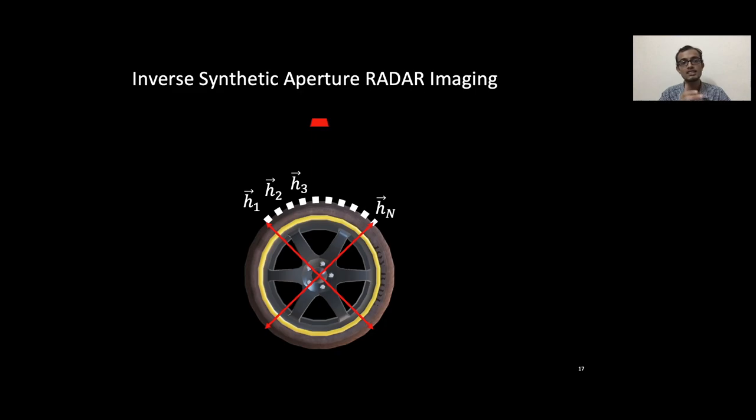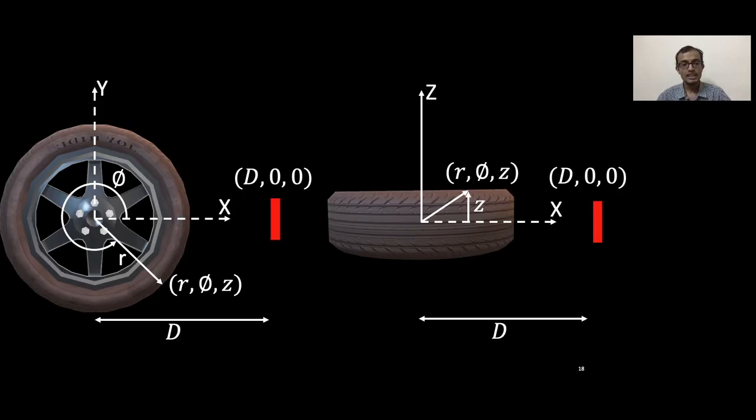When the target is moving, it's called inverse synthetic aperture radar. Now let's define our algorithm more concretely. For our case, the radar is placed in front of the tire at a certain distance d along the x-axis. Our objective is to find two radii corresponding to the surface and the groove, and simply subtract the two to obtain tire wear.